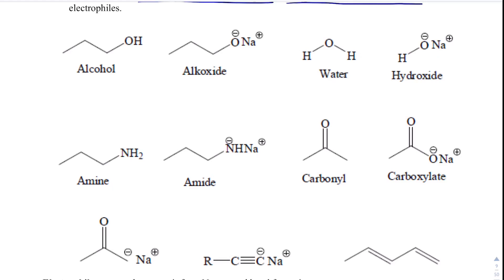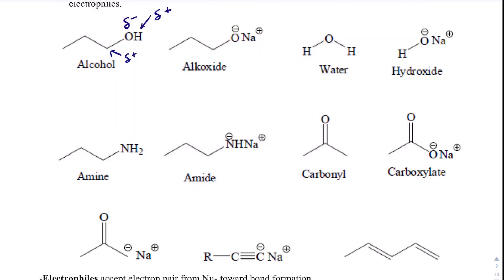If we look at a bunch of different functional groups, what's important is that you remember your electronegativities and which heteroatoms tend to be highly electronegative. Oxygen is one of those. So oxygen is going to be delta-negative. Whatever oxygen is bound to is going to be delta-positive — that would be hydrogen and carbon. So by definition, oxygen is a nucleophile, which we abbreviate 'Nu'.